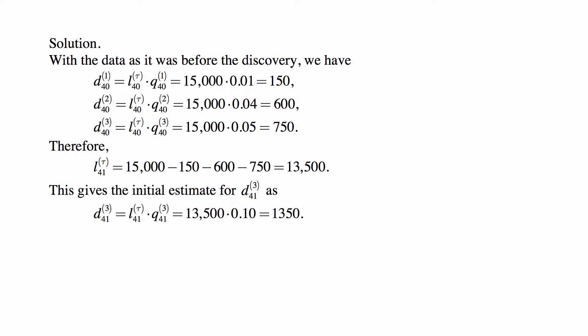And we know from the data for the second year that decrement three or cause three causes 10% of them to leave. 10% of 13,500 is 1,350. That's the initial estimate before this discovery of a need for a correction.